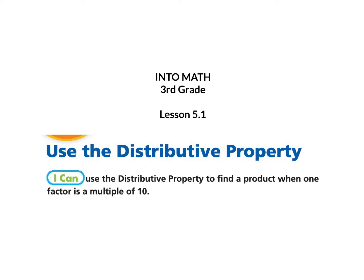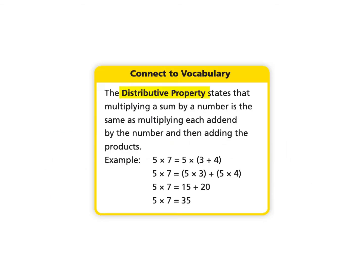Into Math third grade, lesson 5.1: use the distributive property. I can use the distributive property to find a product when one factor is a multiple of 10. We will start by reviewing the distributive property vocabulary, which states that multiplying a sum by a number is the same as multiplying each addend by the number and then adding the products.